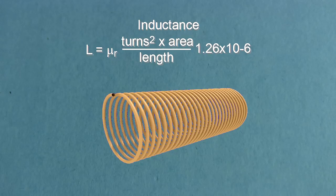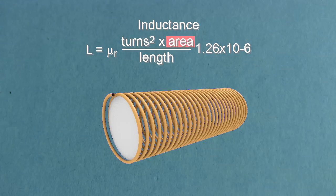Let's start with the simpler variables. This is the number of turns squared, i.e. the number of turns multiplied by itself. This is the cross-sectional area of the coil. To calculate the area, find out the radius and use this formula.